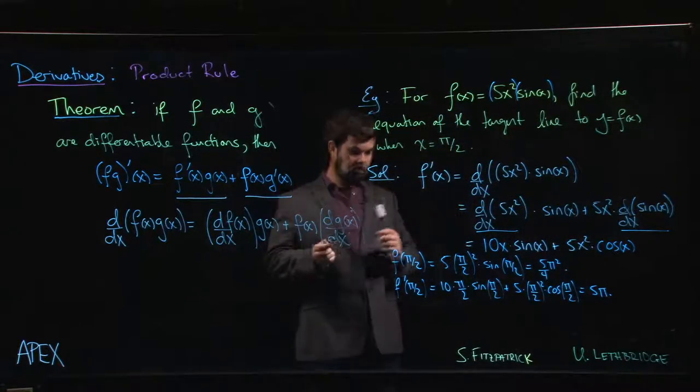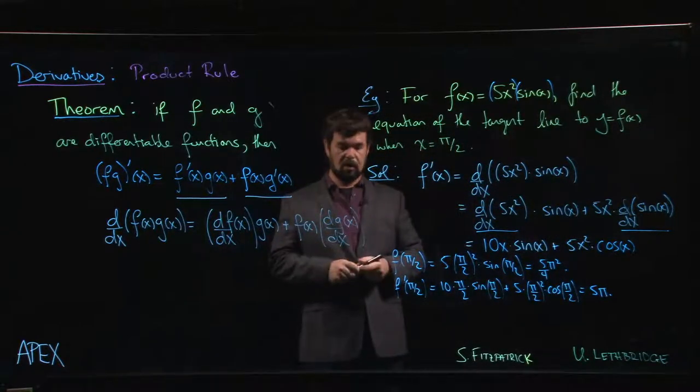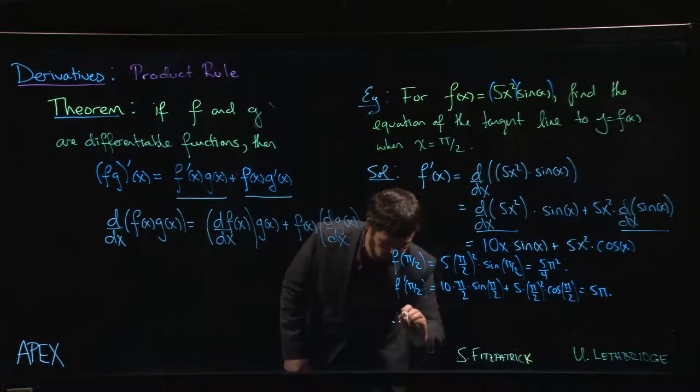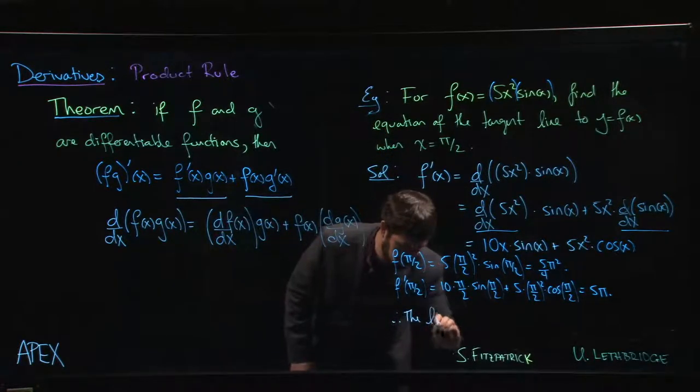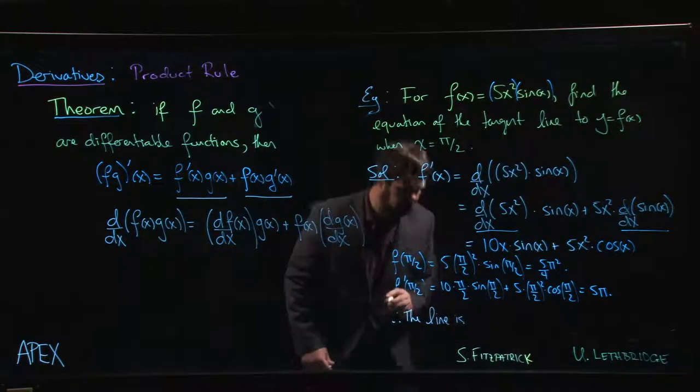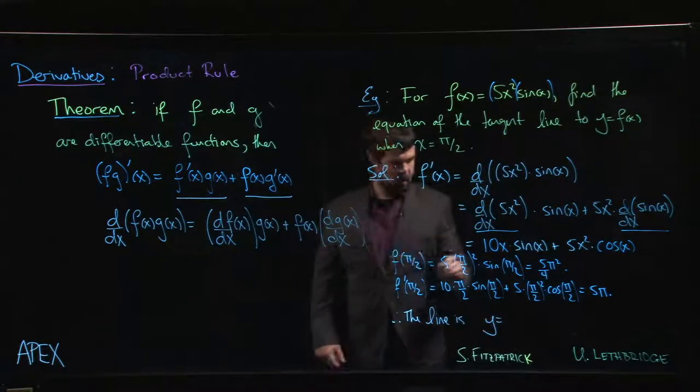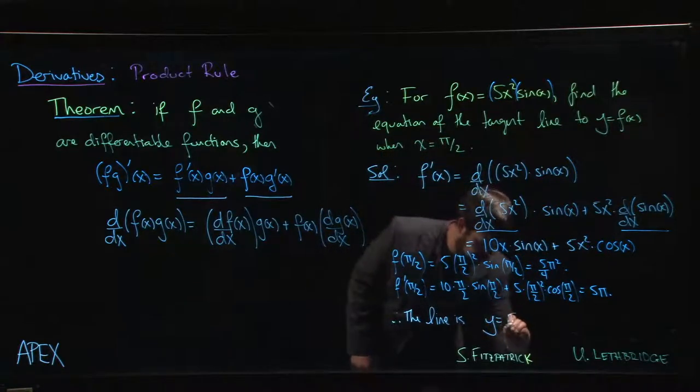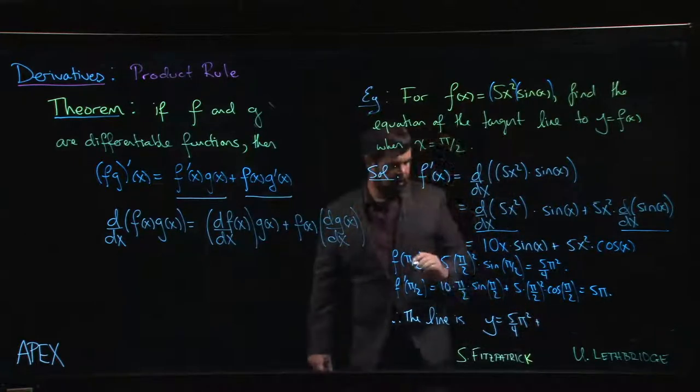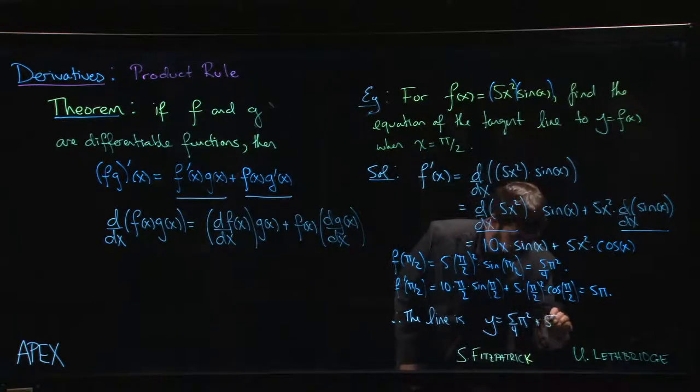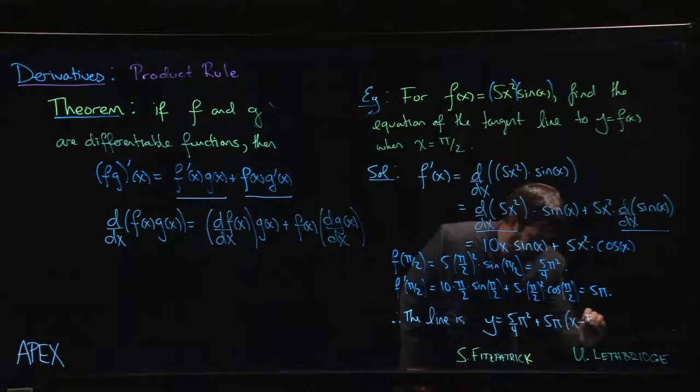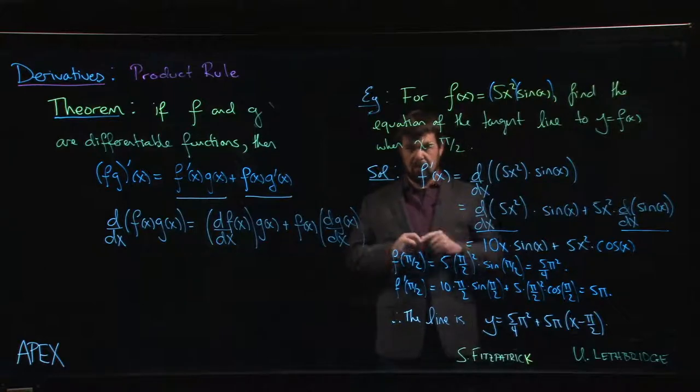So once we've got our point, we've got our slope, we can write down the equation of the tangent line. The line is going to be y equals the y coordinate on the line, 5 over 4 pi squared plus the slope, 5 pi times x minus the x coordinate on the line. And then we're done.